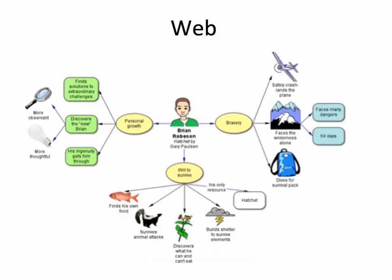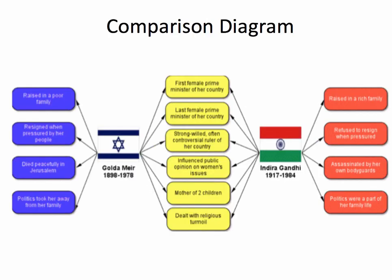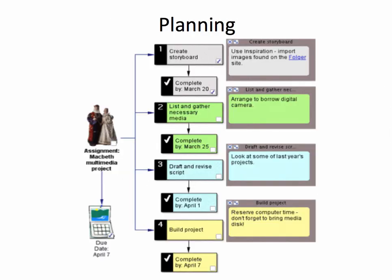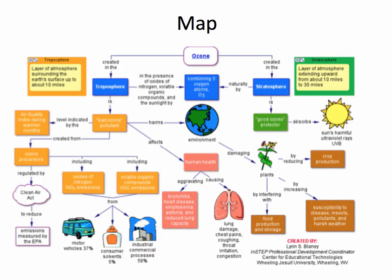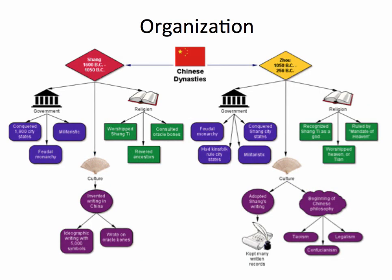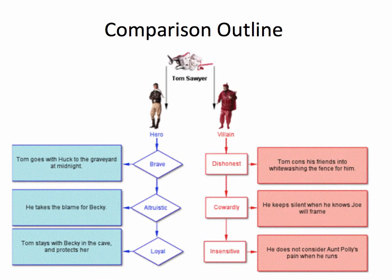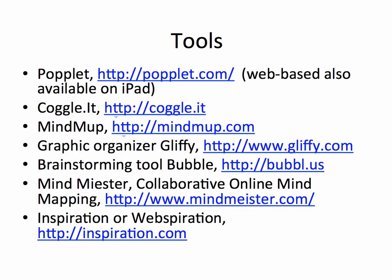Here are a few examples: brainstorming using a web of information, a comparison diagram, planning content, presenting critical thinking, mapping out ideas, or showing the organization of a dynasty in China. It can also be used to compare outlines of characters. These are just a few of the many ways concept maps can be applied.